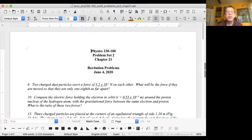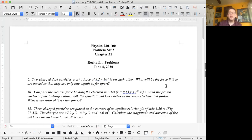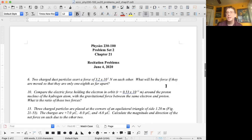We have two charged dust particles exert a force of 3.2 times 10 to the negative 2 newtons on each other. What will be the force if they are moved so that they are only 1 eighth as far apart? Remember, Coulomb's law says that the force is proportional to 1 over r squared, where r is the distance between them. So if you divide r by 1 eighth, what does that do to the force? Figure out what the force will be at that point. That's number six.